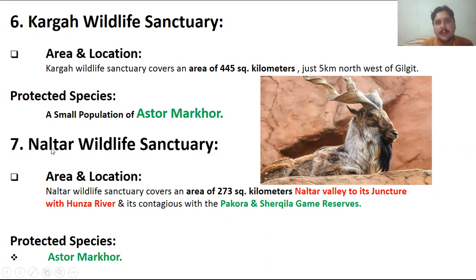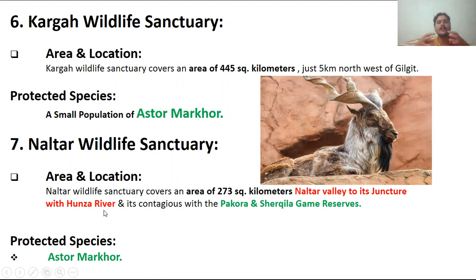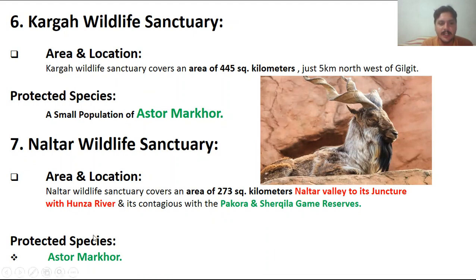The seventh wildlife sanctuary is the Naltar wildlife sanctuary, which covers an area of 273 square kilometers. It is located at another valley to its juncture with the Hunza River — at the junction of the Hunza River and the Naltar valley. Along with it, there are the Pukora, Shirkila Game Reserves that are also present, which we will discuss in the next videos. The protected species again is the Markkhor, a very beautiful and attractive mammal known as the Astor Markkhor.